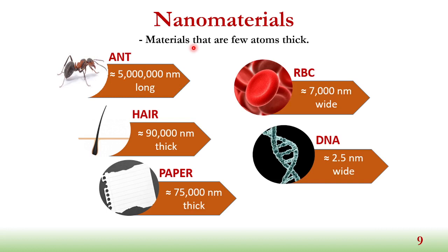To put this into perspective, suppose we imagine an ant. The ant is actually approximately five million nanometers long. If we have a strand of hair, and we measure the thickness of the hair, on average, the approximate thickness of the hair is 90,000 nanometers. Now, suppose we have a sheet of paper, and we measure the thickness of that sheet of paper — it's actually approximately 75,000 nanometers thick.